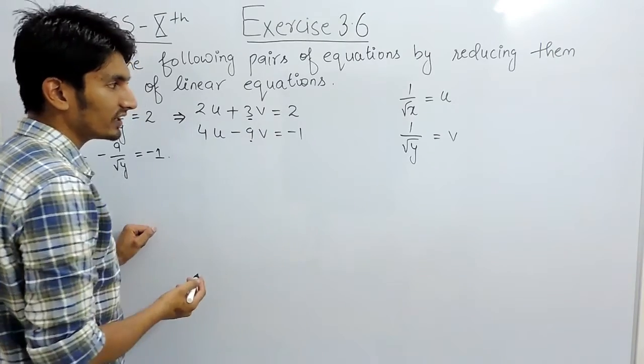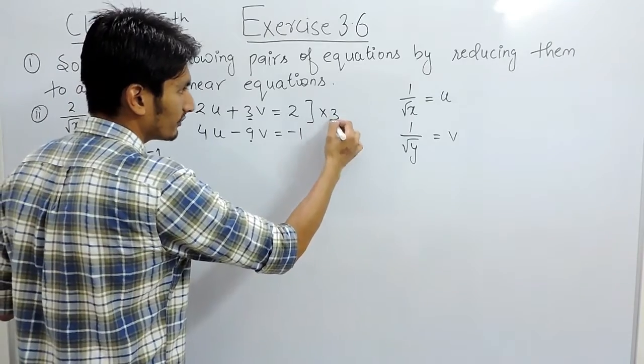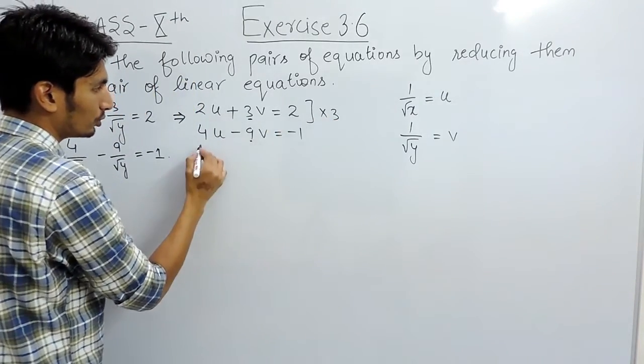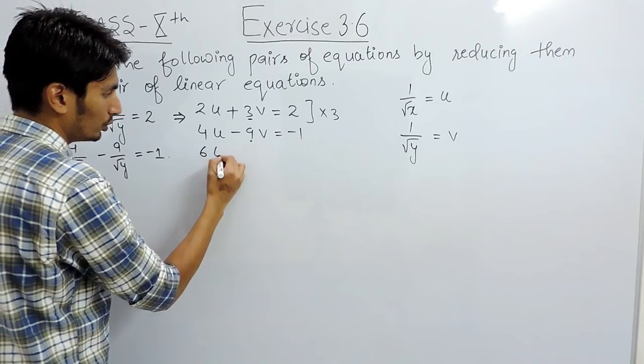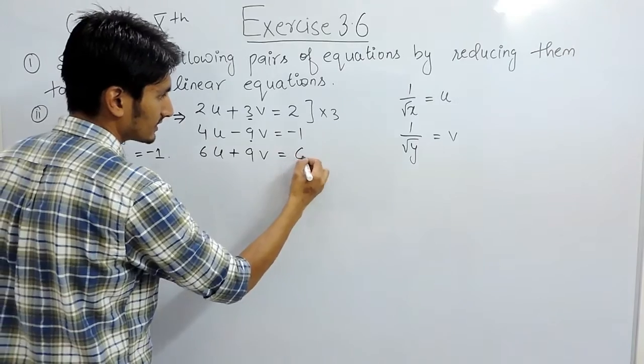Here it is 3, and if you want to equate this by 9, for that you have to multiply this equation with 3. And the new equation will become 3 multiplied by 2 is 6u, this is plus 9v, and this is 6.